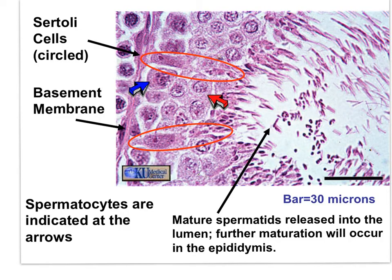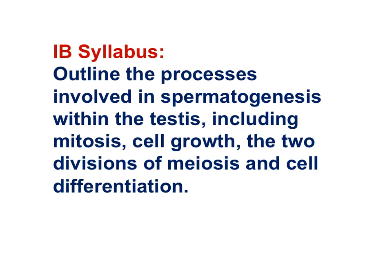In this micrograph, these cells are spermatocytes — some are primary spermatocytes, still diploid; some are secondary spermatocytes, now haploid, ready for the final meiotic division to form spermatids seen here. Are you gaining control of this statement? Outline the processes involved in spermatogenesis within the testes, including mitosis, cell growth, the two divisions of meiosis, and cell differentiation.